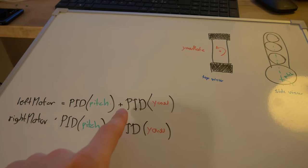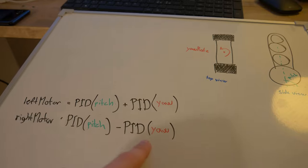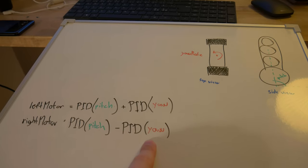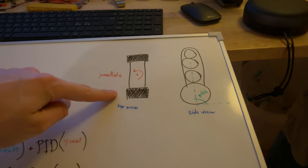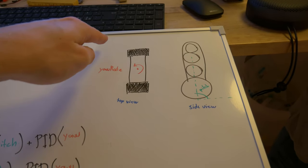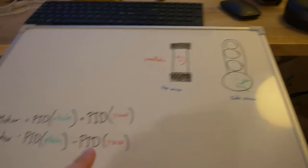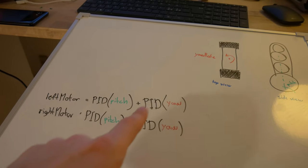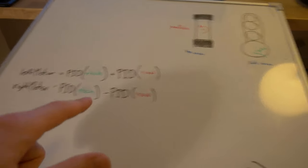In one case, I'm going to add it, and for the other motor, I'm going to be subtracting the yaw. The reason is, if you want something to yaw, you need one side to move forward and the other side to move backwards. In this way, I will be able to control the yaw.